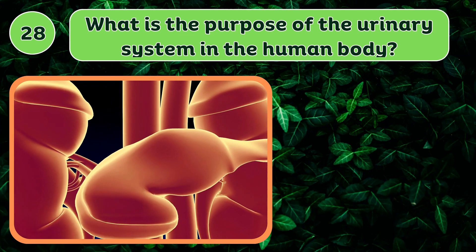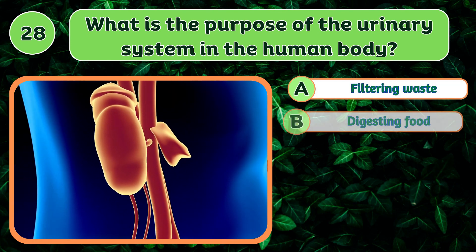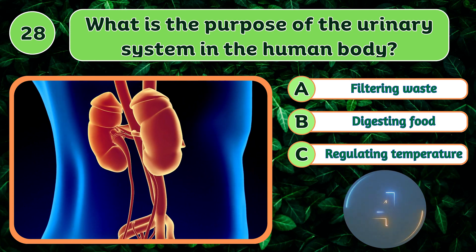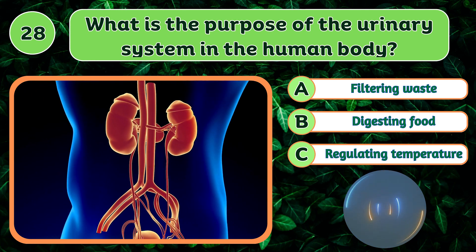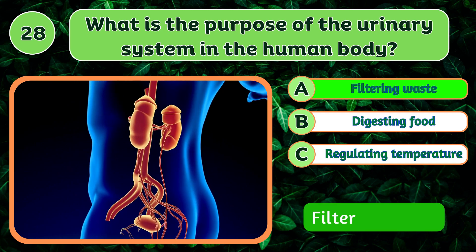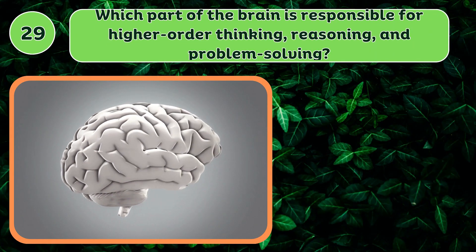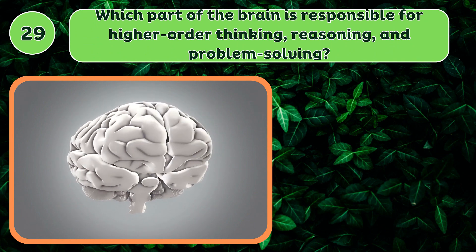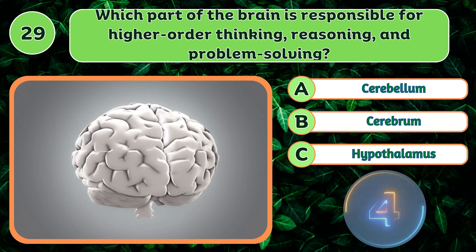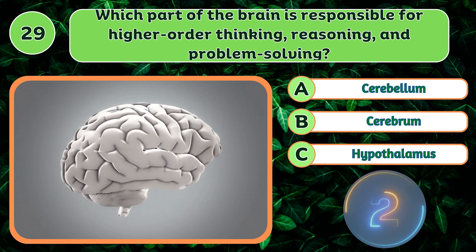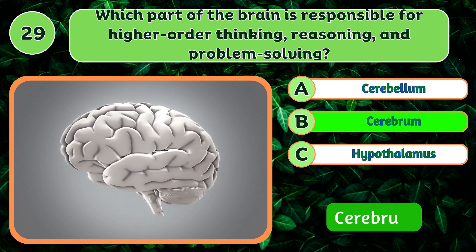What is the purpose of the urinary system in the human body? Filtering waste. Which part of the brain is responsible for higher-order thinking, reasoning, and problem-solving? Cerebrum.